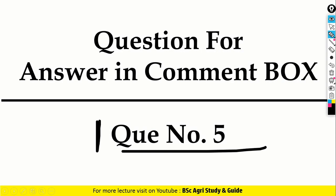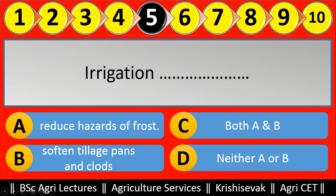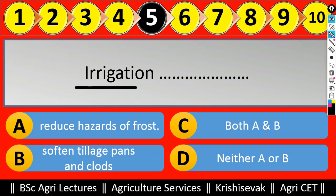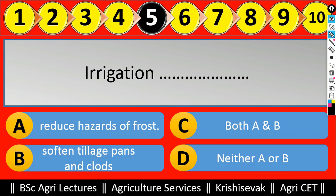Now, question number five is for you to answer in the comment box. You will be recognized as a brilliant student in the next MCQ lecture. The question is: 'Irrigation ______.' Options are: A) reduces hazards of frost, B) softens tillage pans and clots, C) both A and B, and D) neither A nor B. Give your answer in the comment box.